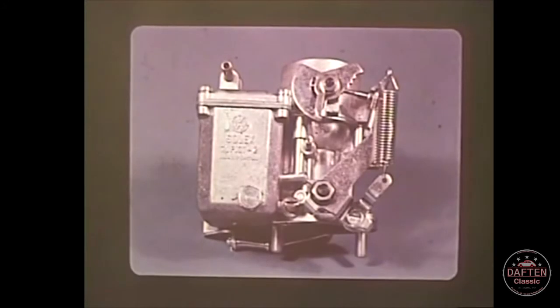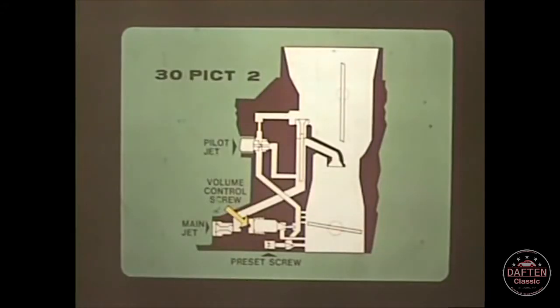But on cars equipped with emission control devices, some changes were made that require different adjustment techniques. The 30 PICT-2 carburetor, which was installed on 1968 types one and two vehicles, is the first of the emission control carburetors. The idle speed is controlled by an adjusting screw which opens or closes the throttle as before. But notice the changes in the idle circuit.